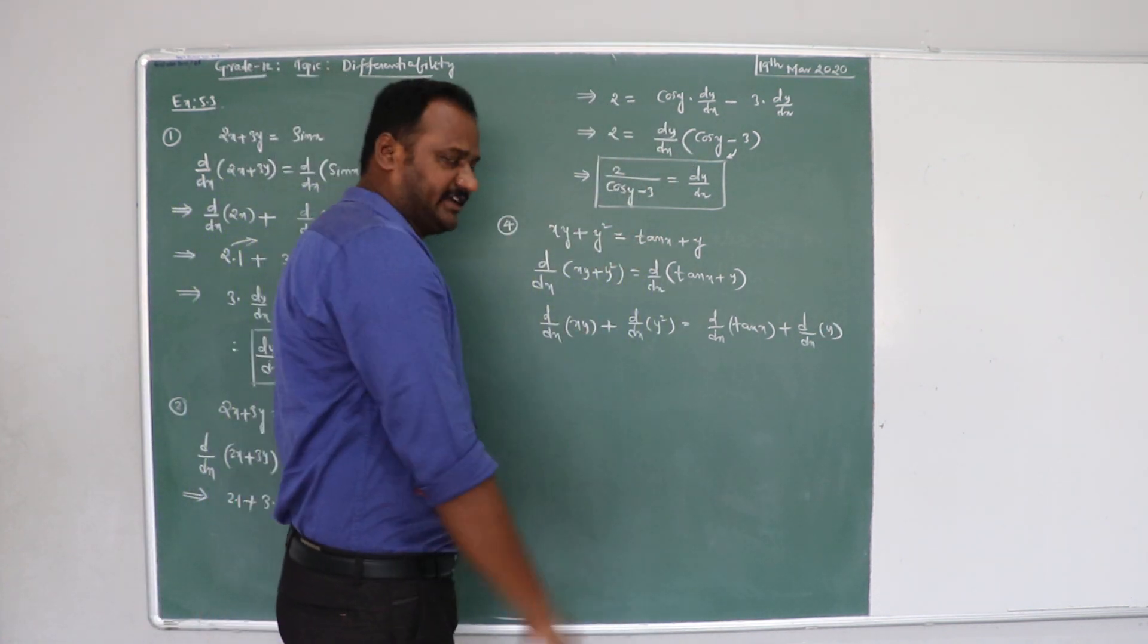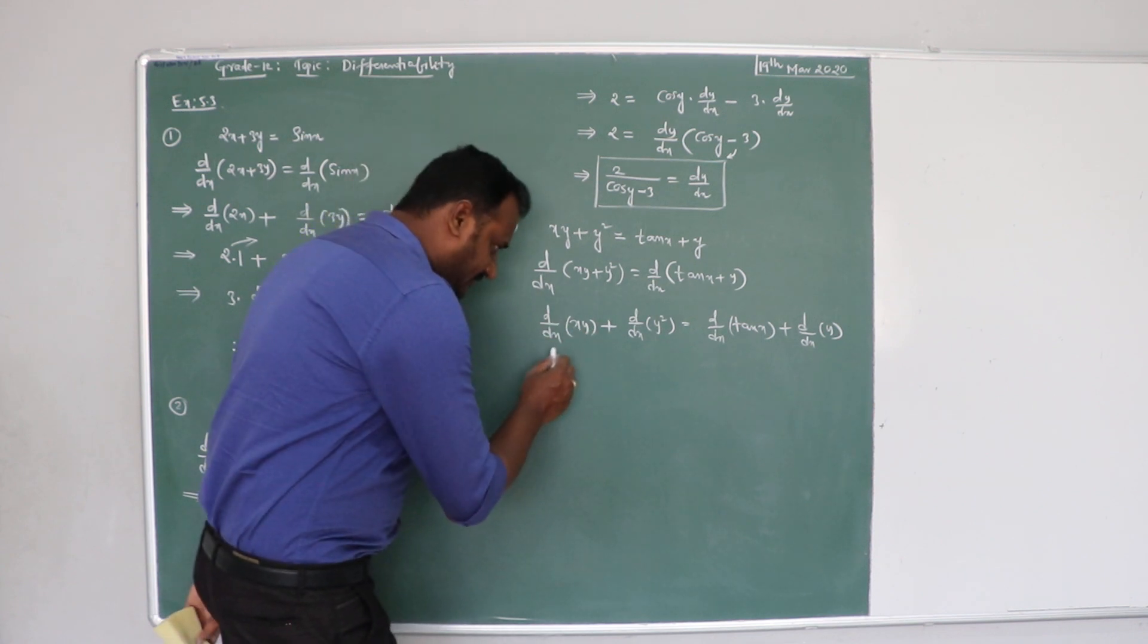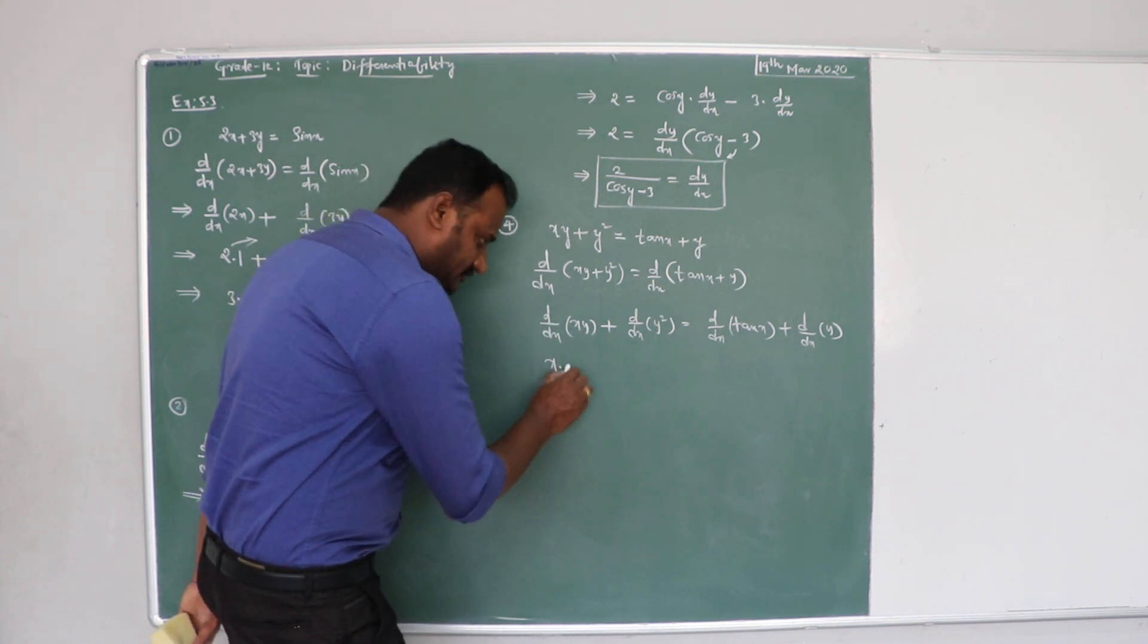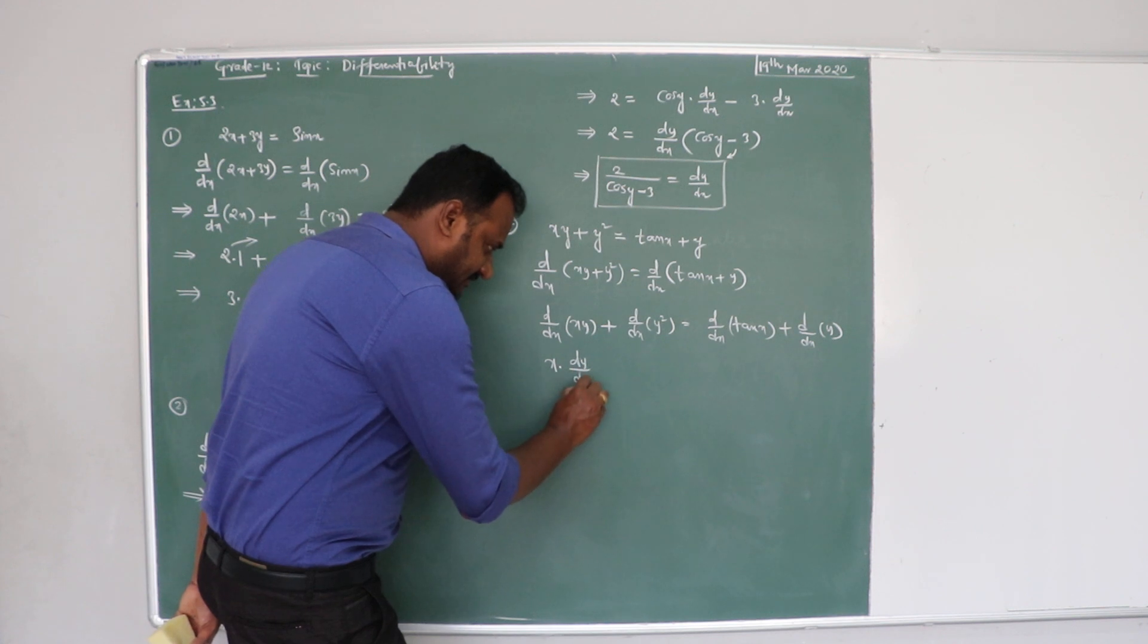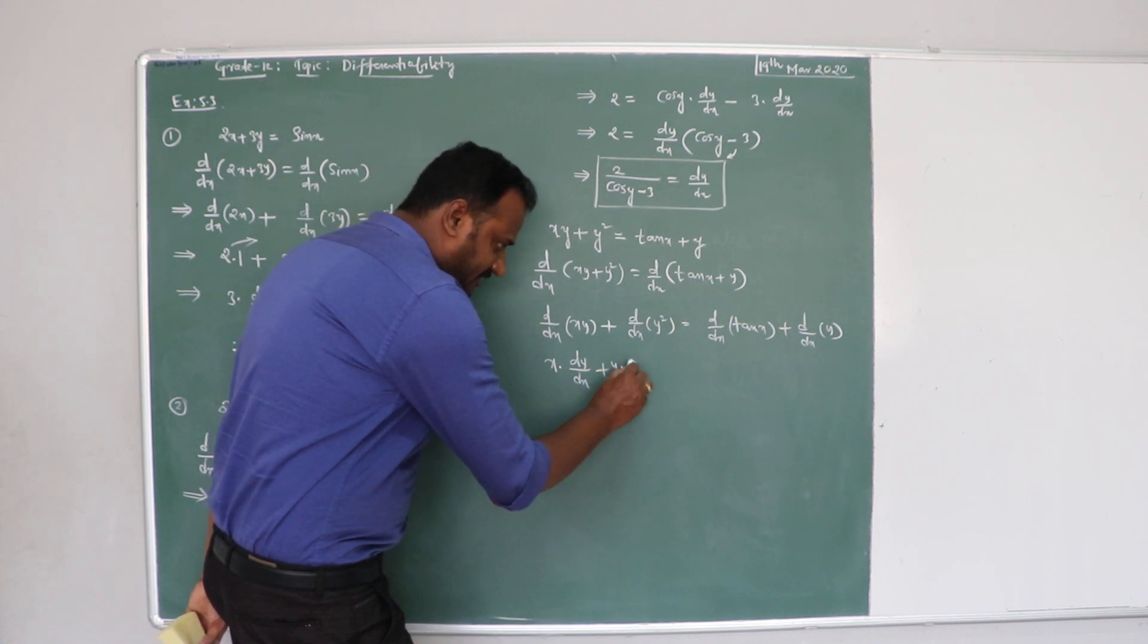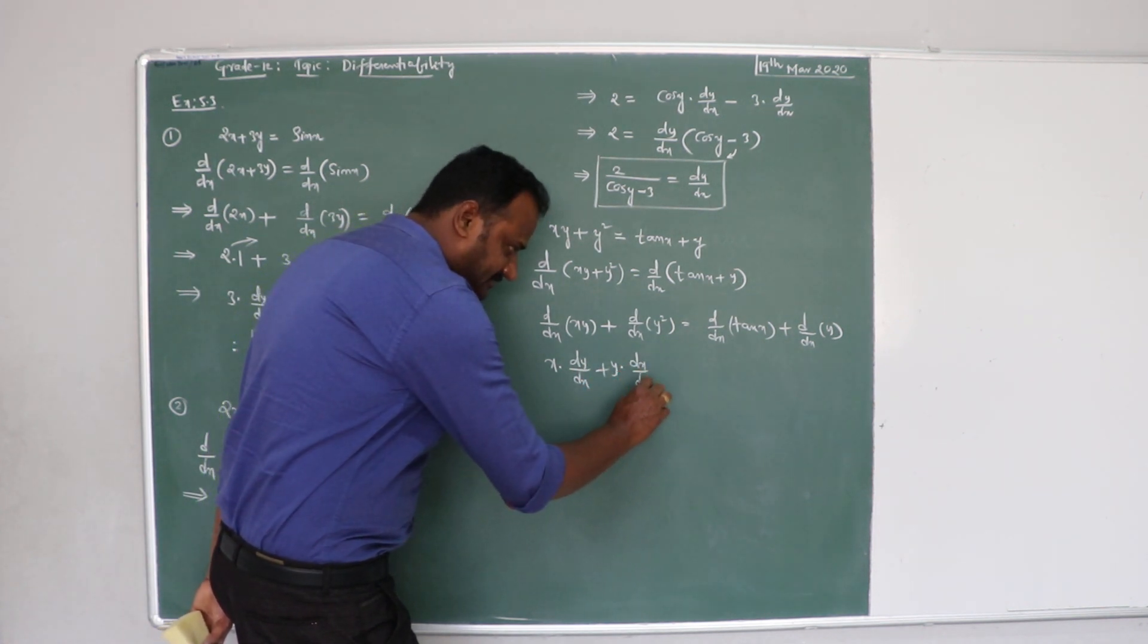Now, d by dx of x into y is the form of u into v. We can answer this by x into dy by dx plus y into dx by dx.